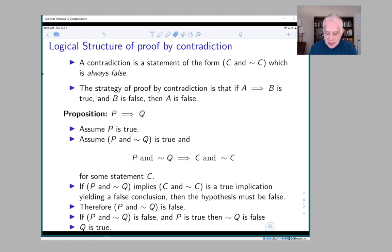Because an 'and' statement is only true if they're both true, but if C is true then not C is false and vice versa. So there's no way that both C and not C can be true. So that's a contradiction.